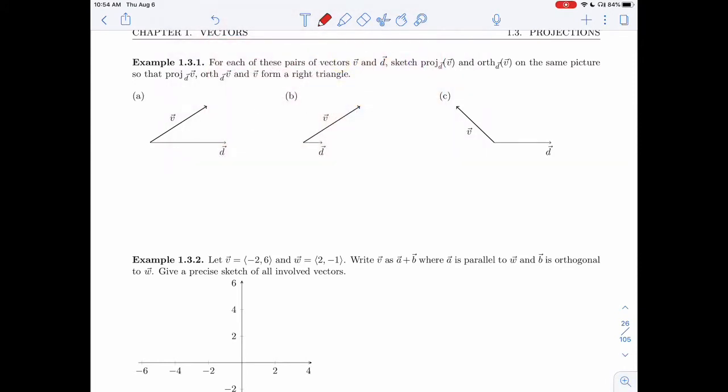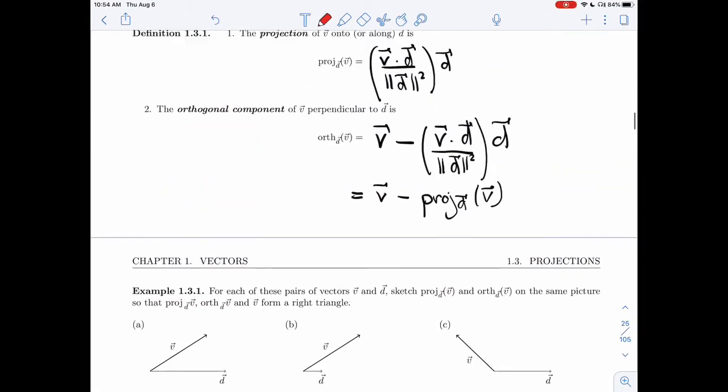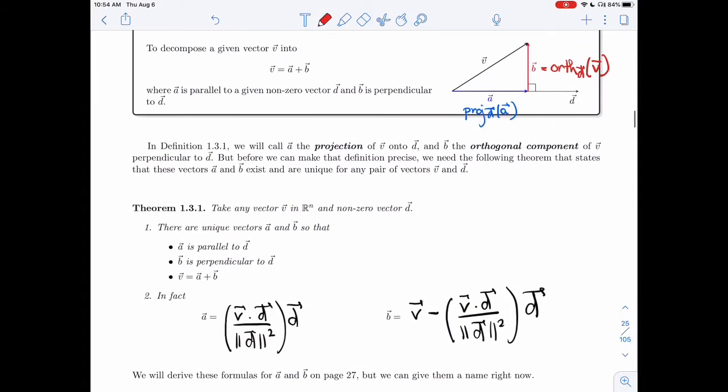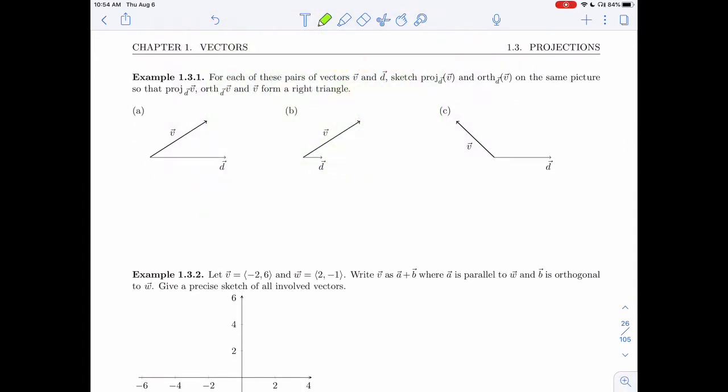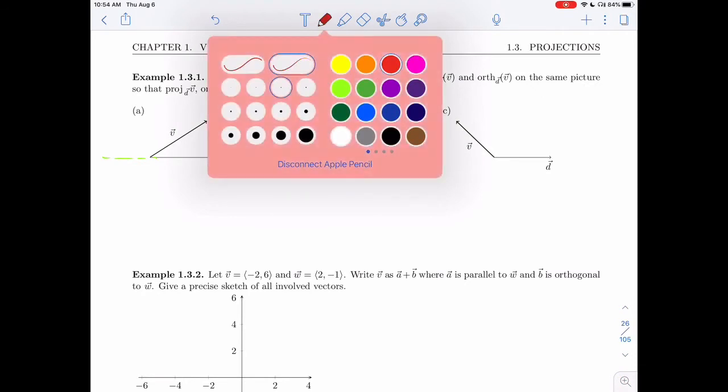In the first problem, I'm asked for each of these pairs of vectors V and D, sketch the projection of V onto D and the orthogonal component of V perpendicular to D on the same picture so that projection, orthogonal, and V form a right triangle. As I mentioned in the last video, D stands for direction. I want to decompose V along that line and perpendicular to that line.